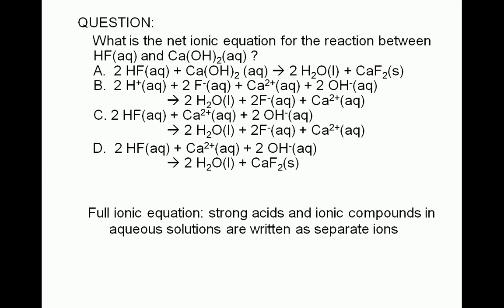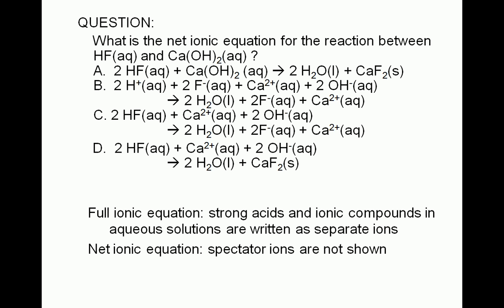If, upon writing the full ionic equation, we find that nothing actually happened to some of the ions, we call these spectator ions. We then take them out of the equation and we get what's called the net ionic equation.